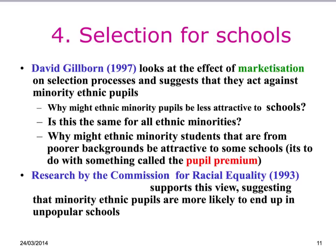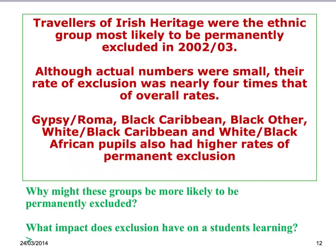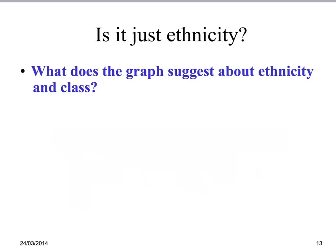Research by the Commission for Racial Equality supports this view, suggesting that most minority ethnic pupils are more likely to end up in unpopular schools. Consider also whether it's just schools not picking students, or whether it relates to parents' selection of schools — try to develop a debate. Finally, is it just ethnicity? What does the following graph suggest about the link between ethnicity and social class?